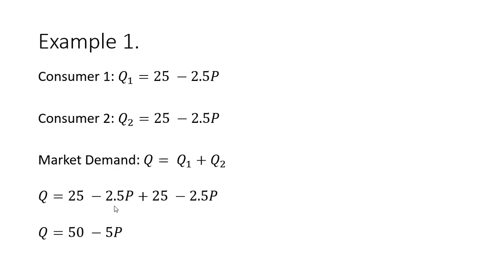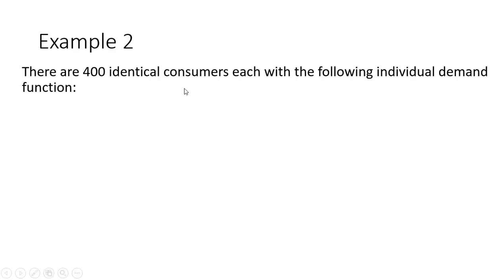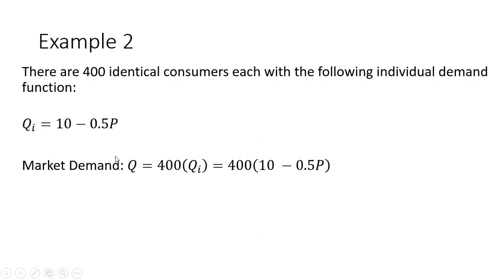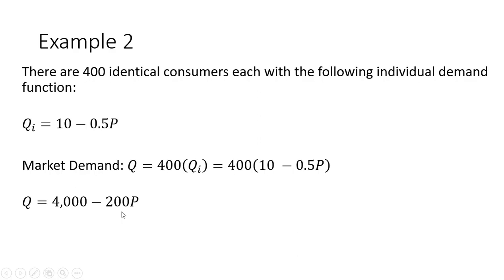25 plus 25 and minus 2.5p plus minus 2.5p gives us the minus 5p. In example two, there are 400 identical consumers, each with the following individual demand function: q_i equals 10 minus 0.5p. The overall market demand is just 400 times the individual consumer's demand. Plugging in and simplifying, we get 4,000 minus 200p — 400 times 10, and 400 times 0.5 gives us the minus 200p.